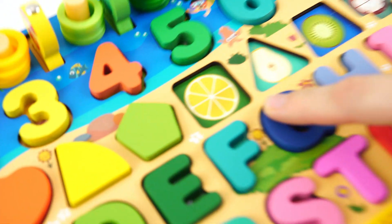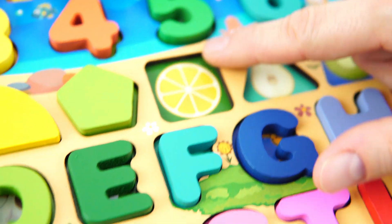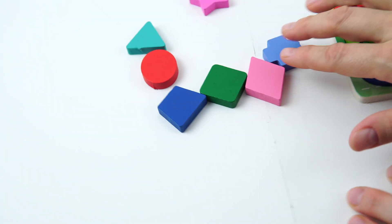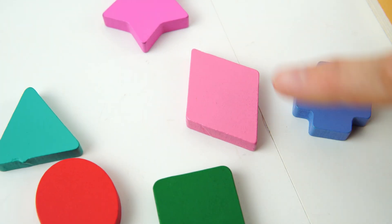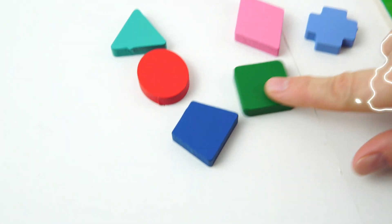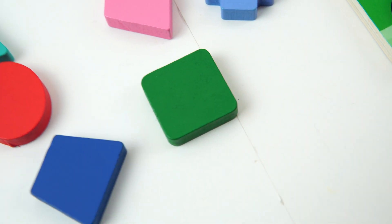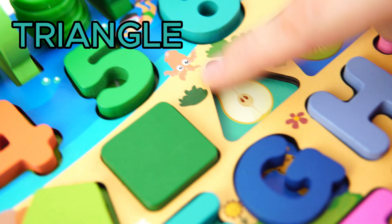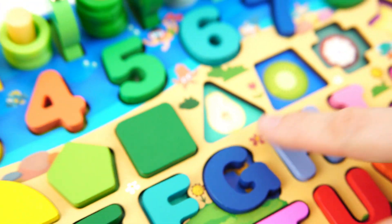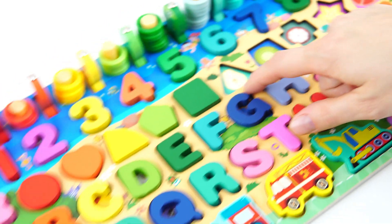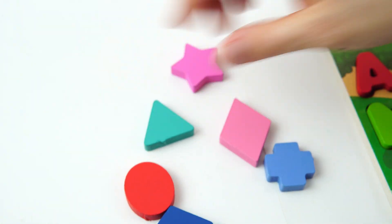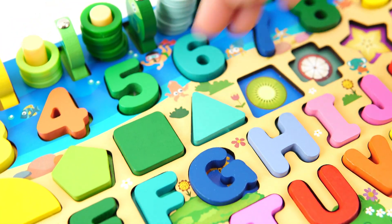Here's our next shape. This one has four equal sides. It's a square. Let's look at our shapes for our square shape. This one has four sides, but it doesn't look exactly right. Here's our next shape. Good job.